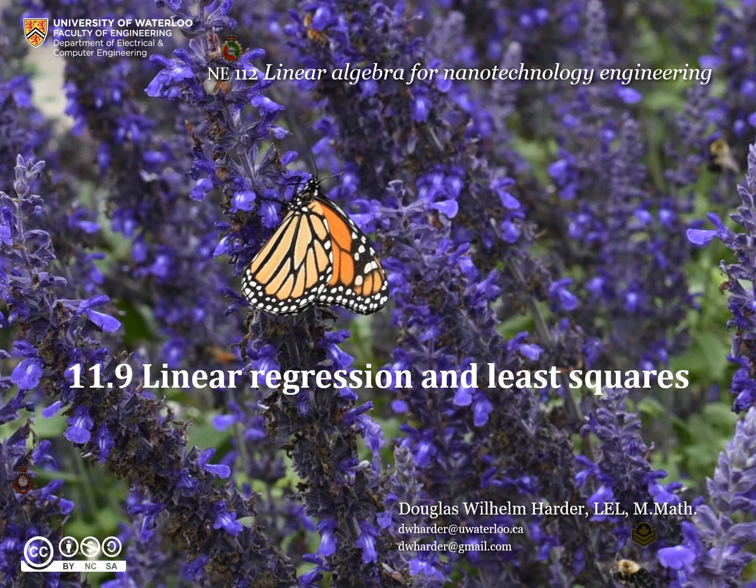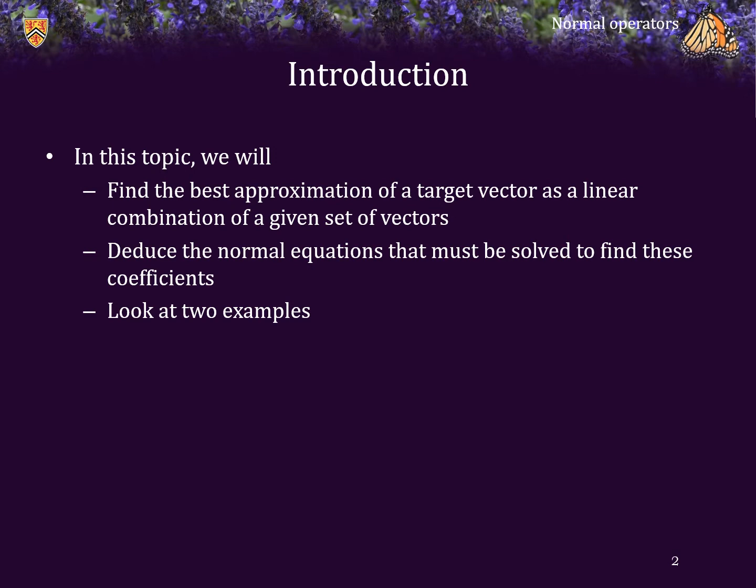Good day. For those of you who do not know me, my name is Douglas Harder, and in this topic we're going to look at linear regression and least squares. We will find the best approximation of a target vector as a linear combination of a given set of vectors, deduce the normal equations that must be solved to find these coefficients, and we will look at two examples.